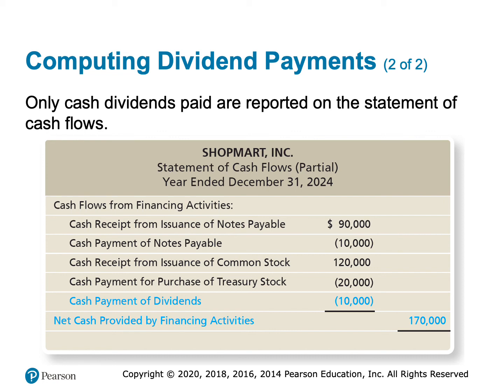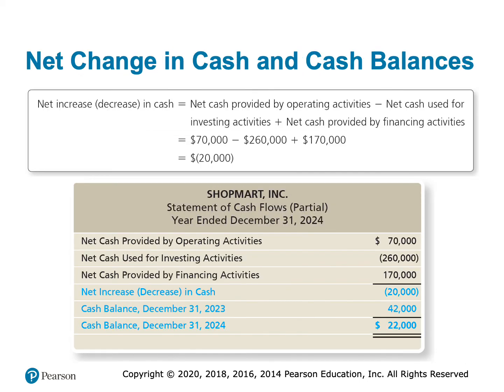In total, cash provided by financing activities is a positive $170,000. Combining this with operating activities of positive $70,000, minus investing activities of negative $260,000, plus financing of positive $170,000, cash decreased by $20,000 — exactly what the balance sheet shows. Adding the beginning cash balance of $42,000 gives us the ending cash balance of $22,000, which matches the balance sheet exactly.